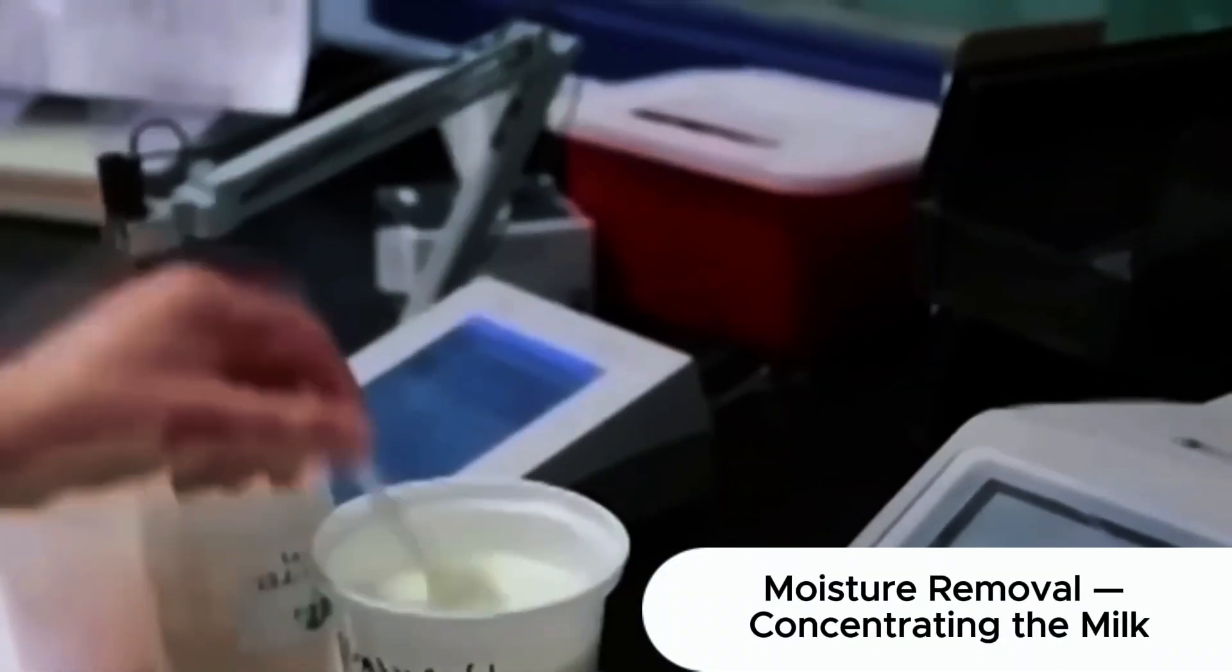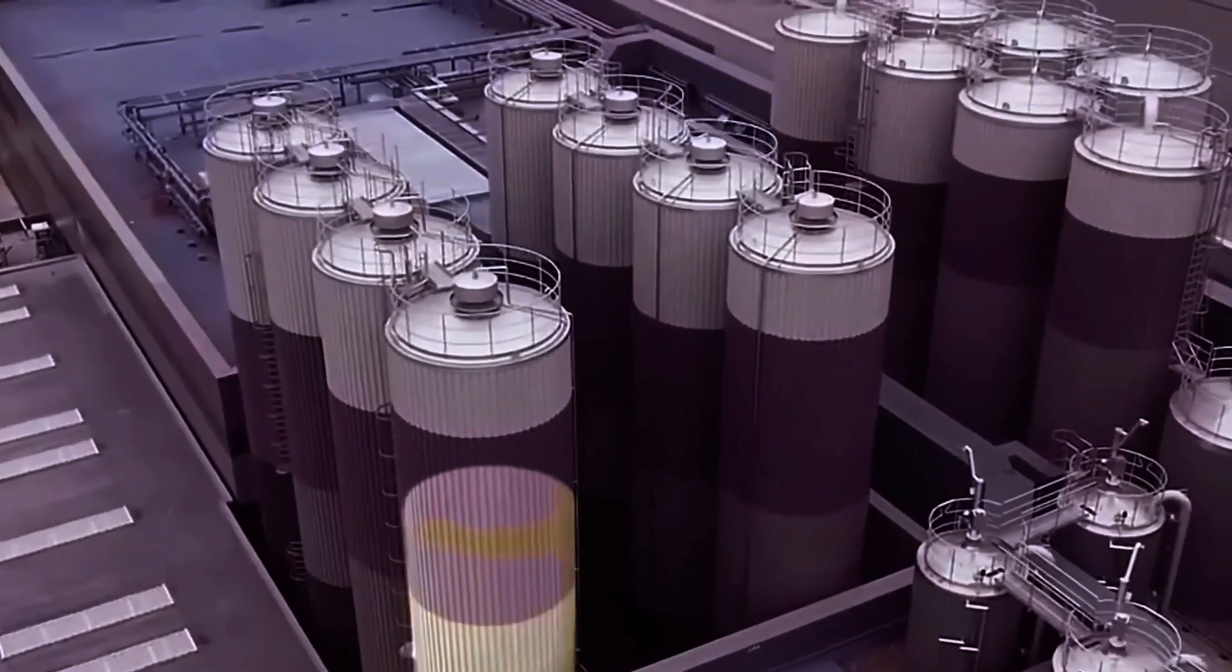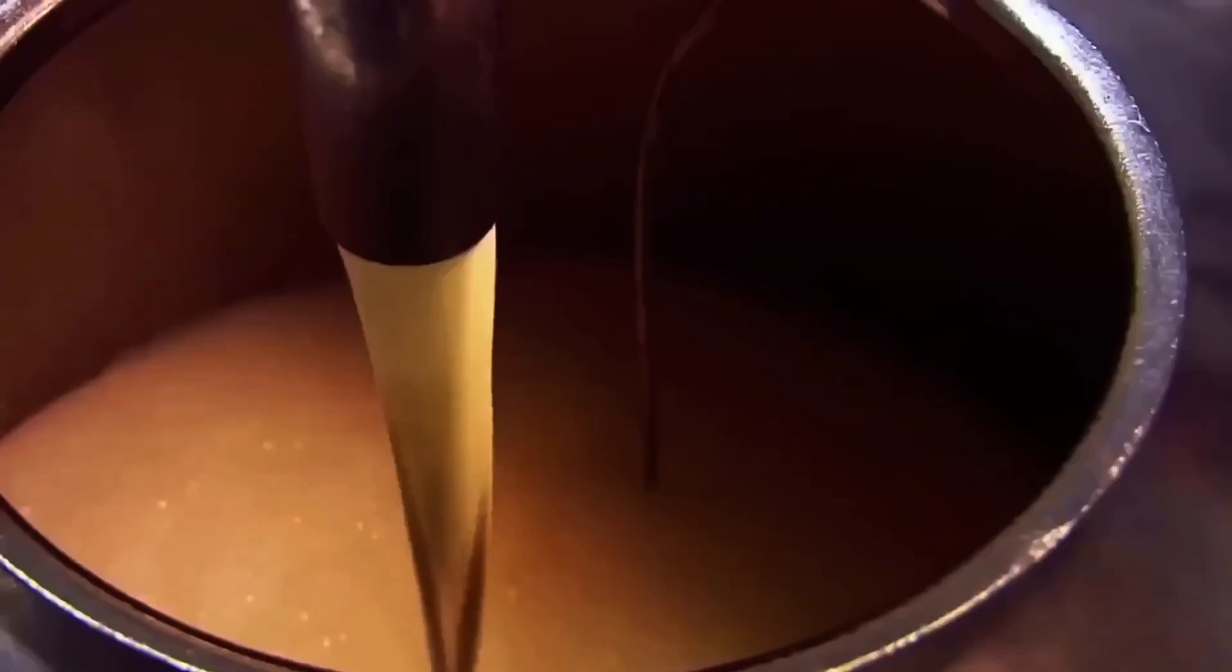Now comes the most important phase, evaporation. The mixture is fed into large evaporator systems, multi-stage stainless steel machines that operate under vacuum conditions. The reduced pressure allows water to evaporate at lower temperatures, protecting proteins, vitamins, and flavor from damage or caramelization. Roughly 60% of the water is removed from the milk. What remains is a dense, rich, and sweet substance, the base of the condensed milk we recognize by its consistency. The evaporation continues until the mixture reaches the exact level of thickness required by the formula.